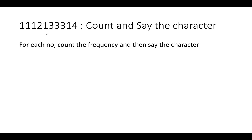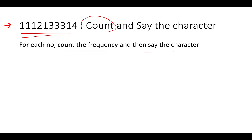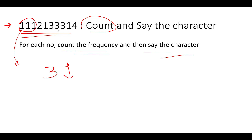Let's reduce the problem into a subproblem. Assume you are given a string, and for each character you need to count its frequency and then say that character out loud. For example, if you see three consecutive ones, you count the frequency of those contiguous ones — which is three — and the updated string in the next sequence becomes 'three one'.